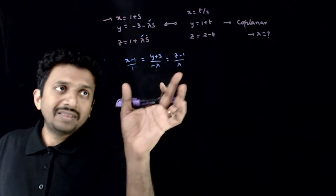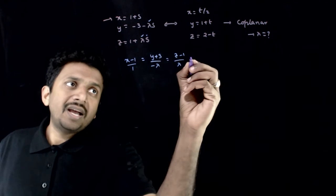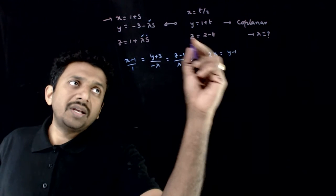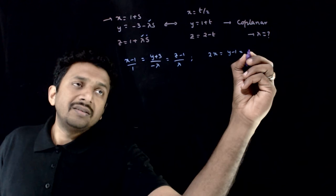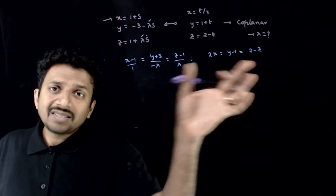This looks familiar. This is the equation of the first line. All these are equal to s. If you take the second line, 2x is equal to y minus 1 is equal to 2 minus z. This is the second line.